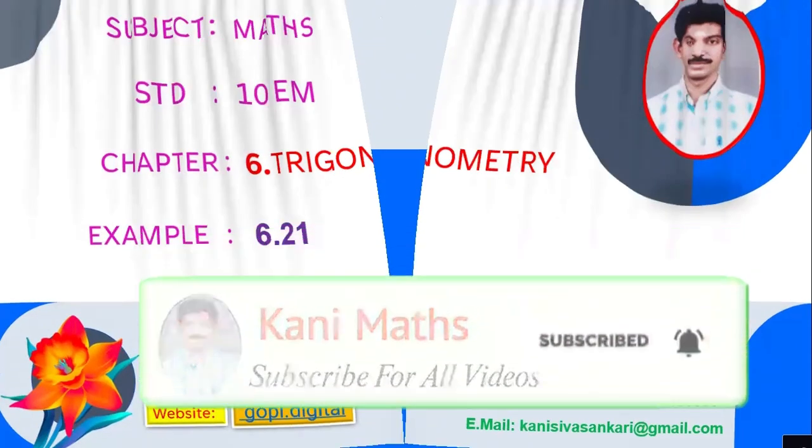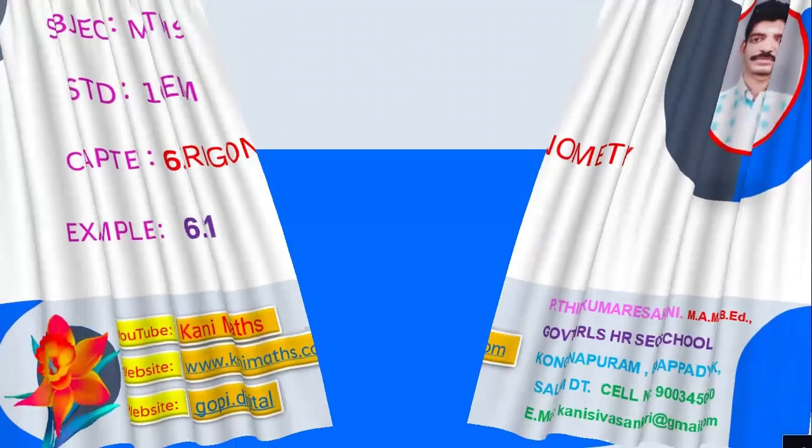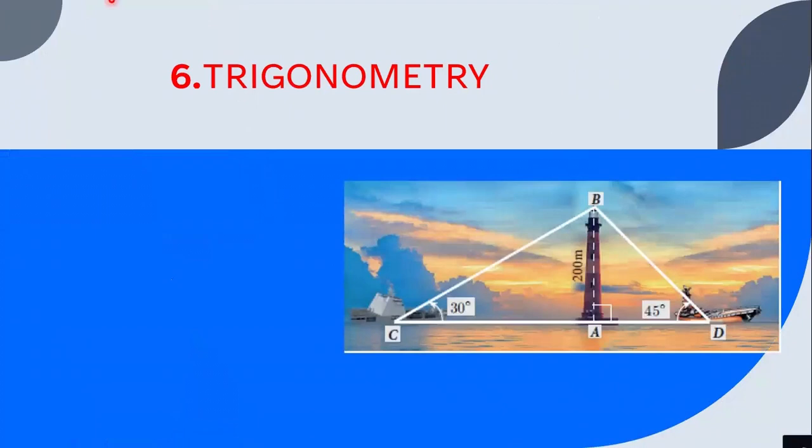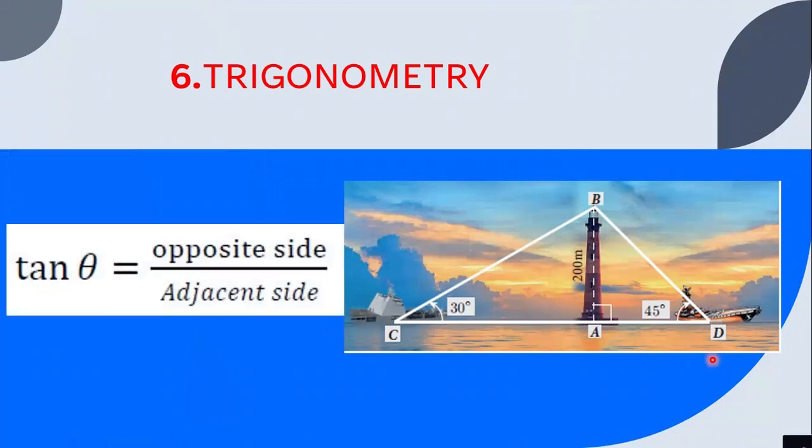Now, let's say that we have a basic idea in trigonometry. We see two ships from a lighthouse. We see the distance between the two ships. So we have a tan theta formula, opposite side by adjacent side. We know that we are going to use trigonometry.